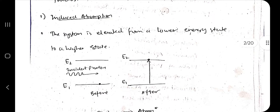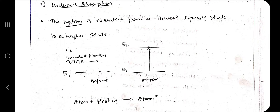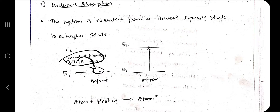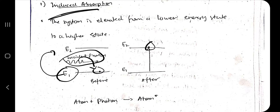Let's understand the differences between the three interactions. In induced absorption, the system is elevated from a lower energy state to a higher state. There are two energy states and an atom present at the lower state. When an incident photon comes, the energy is transferred to the atom, so it moves from the lower energy state to the higher energy state — energy is being absorbed.